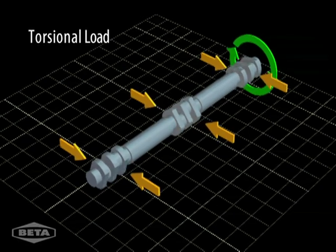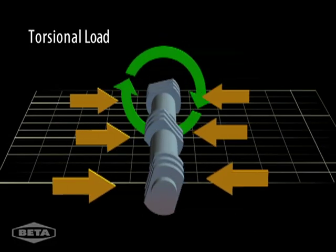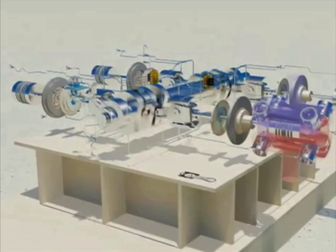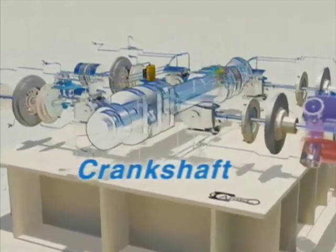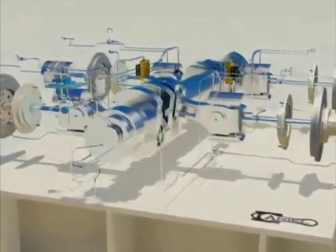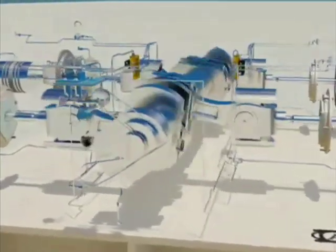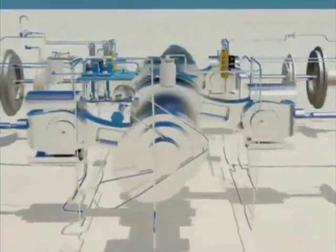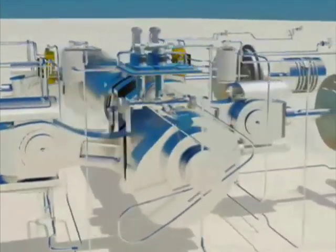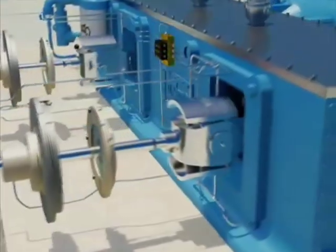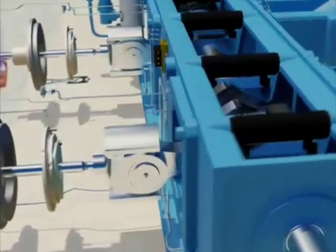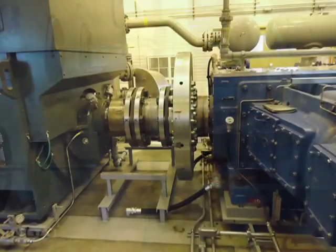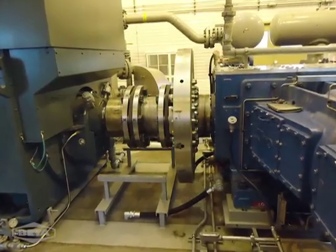In this compressor, the load from each cylinder acts on the crankshaft, resulting in a torque that can cause vibration problems. Each machine will have a unique load profile. A torsional vibration analysis considers how this combined load interacts with the crankshaft, the engine or motor, the coupling, and the resulting stress and vibration on the system.